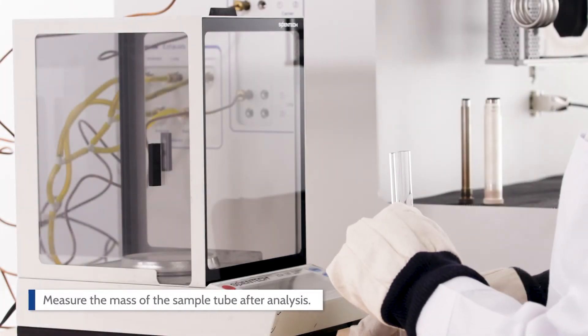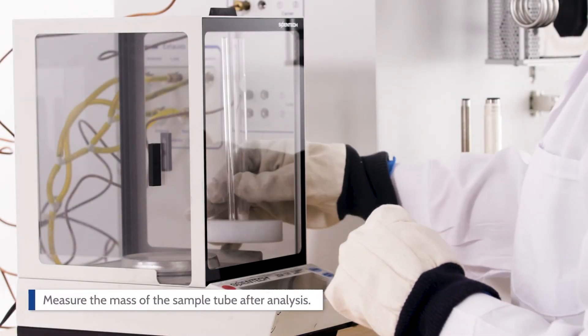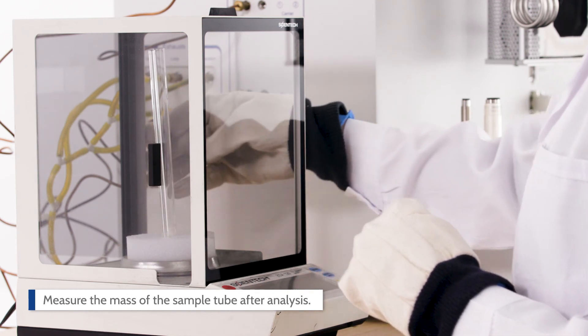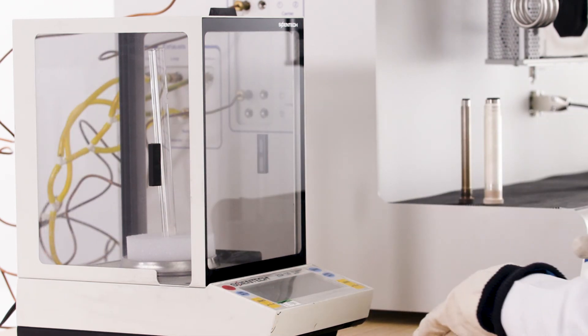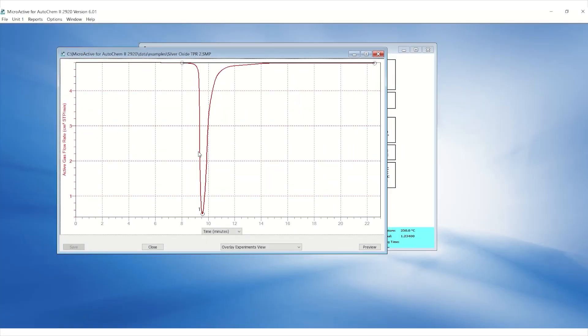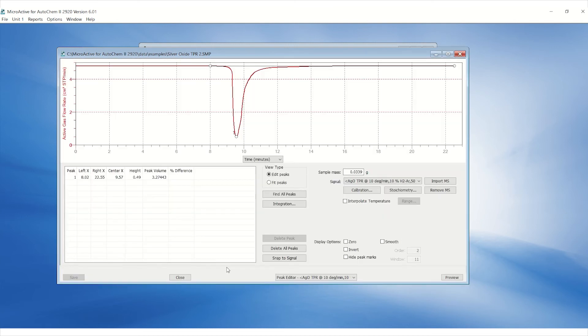Measure the mass of the sample tube after analysis as a reference. Use the initial sample tube plus sample mass for the report. Now the results are ready for viewing. Go to Peak Editor to properly select the peak. The peak can be adjusted by double-clicking on the circle on the baseline.